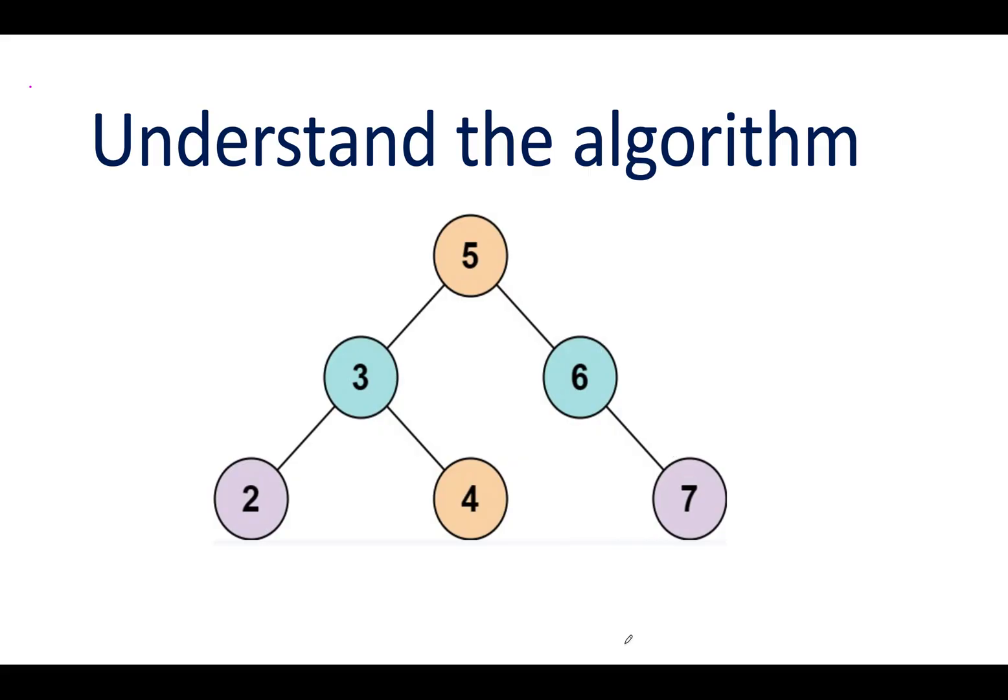This is the binary search tree that is given to us and we need to tell whether there exist two elements in this binary search tree when added together gives us the total sum of k.